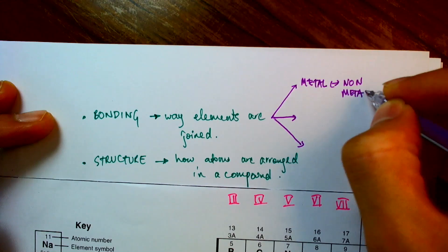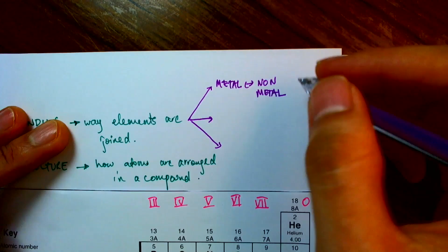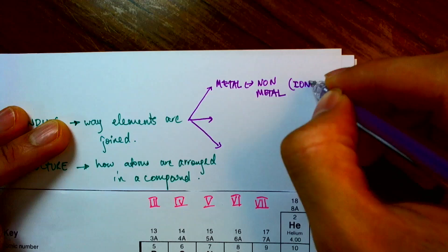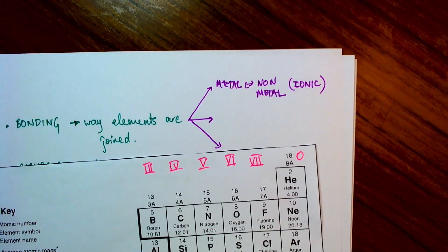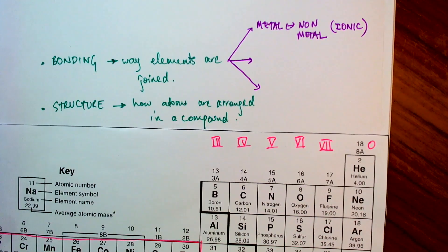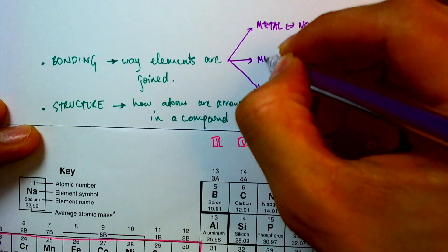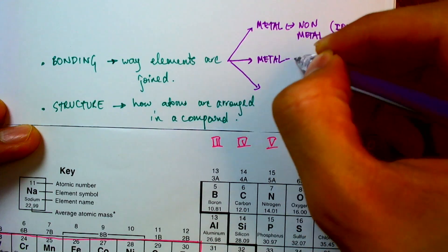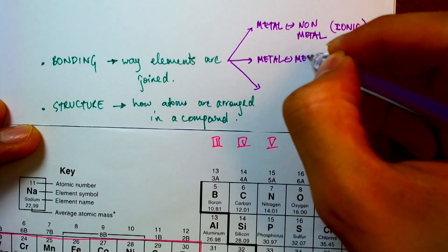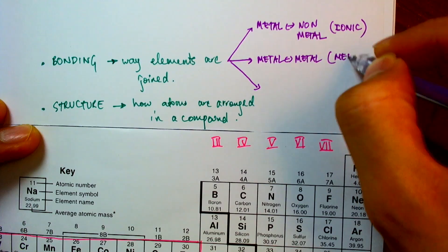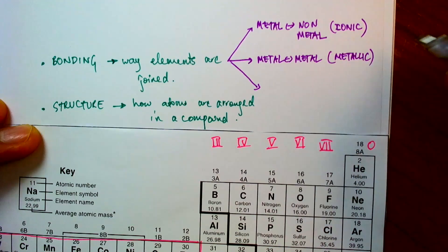where the first type is a bonding between a metal and a non-metal, and there's a name for that, and we give this sort of bonding as an ionic bonding, and then you have bonding between metal and a metal, we call that a metallic bonding,